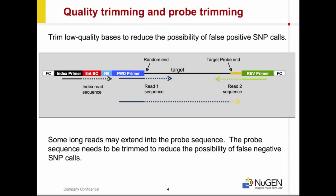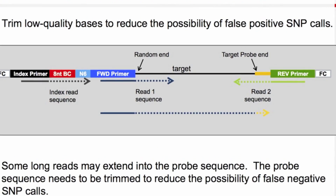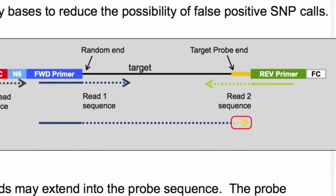For each sample, we want to begin by trimming these FASTQ files. We take two steps for trimming. The first step, we use TrimGalore to trim low-quality bases from the reads. This will ensure that we do not end up with any false positive SNP calls.